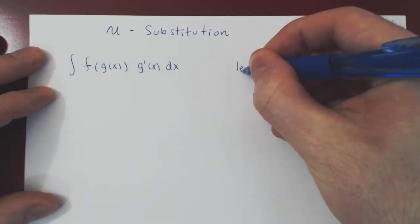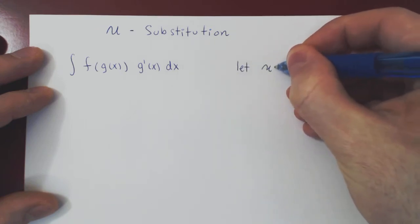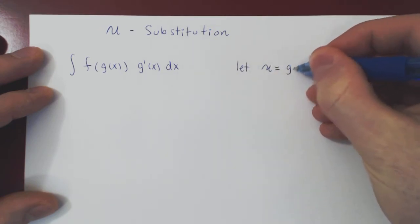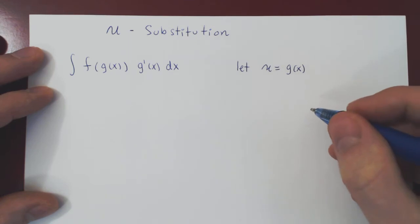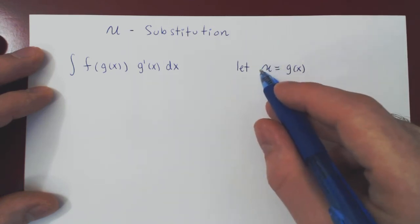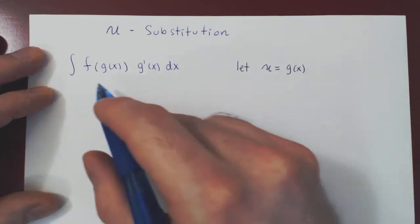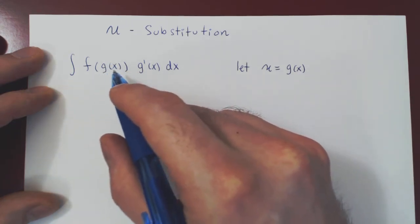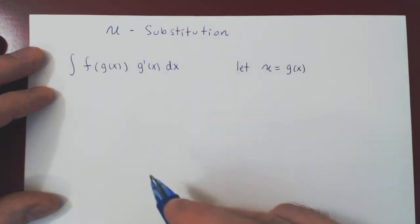So we let here, our new variable u be equal to simply g of x. And that's a general rule of thumb when making a u-substitution. We let u be the function in the integrand whose derivative is multiplying the expression.